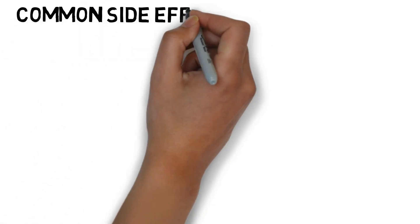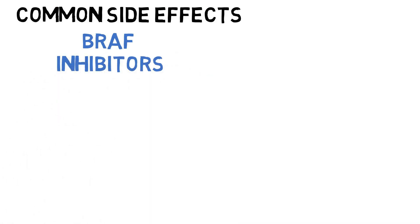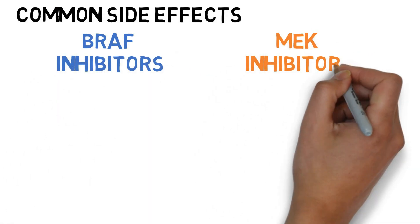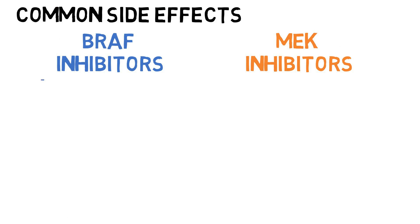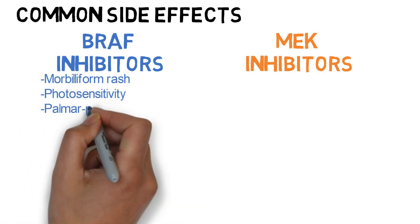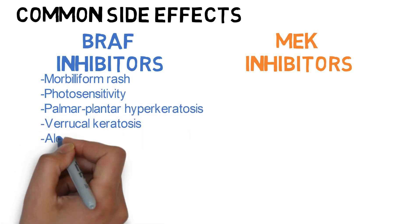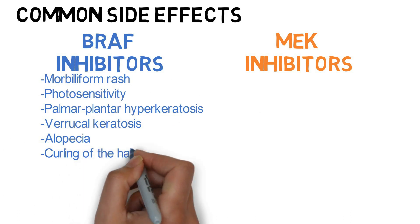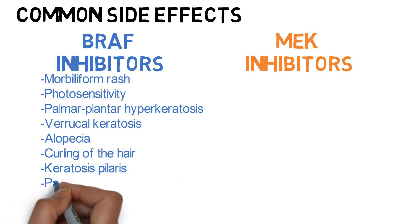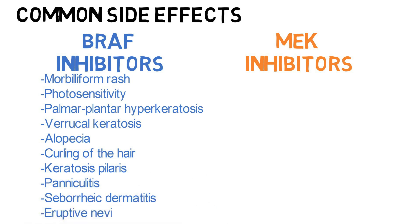Now let's move on to identify common skin side effects of BRAF and MEK inhibitors and learn about their management. For BRAF inhibitors, common side effects include morbilliform rash, photosensitivity, palmar plantar hyperkeratosis, verrucal keratosis, alopecia, curling of the hair, keratosis pilaris, panniculitis, seborrheic dermatitis, and eruptive nevi.